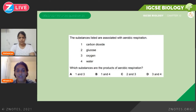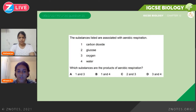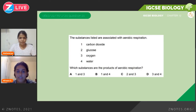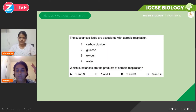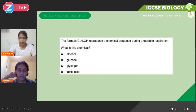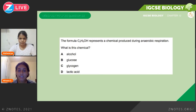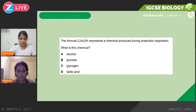That's it for the topic. Now we'll look at some questions. This is May/June 2020. The substances listed are associated with aerobic respiration: number one carbon dioxide, number two glucose, number three oxygen, number four water. Which substances are products of aerobic respiration? Think back to the equation: glucose plus oxygen gives carbon dioxide and water. So the products are one and four — carbon dioxide and water — and the correct answer is B. Next question, also May/June 2020: the formula C2H5OH represents a chemical produced during anaerobic respiration — keyword, anaerobic — and it's a product. C2H5OH is ethanol, that is an alcohol, so the correct option is A.